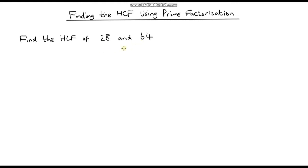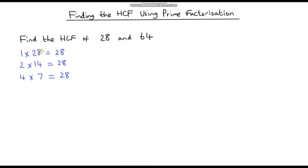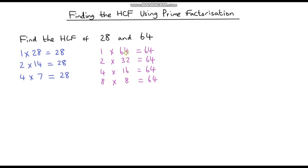As a recap, if we find the highest common factor of 28 and 64 by listing: the factors of 28 are 1, 2, 4, 7, 14, and 28; and the factors of 64 are 1, 2, 4, 8, 16, 32, and 64. To calculate the highest common factor we just need to identify which factors are common to both numbers and which one is the highest.